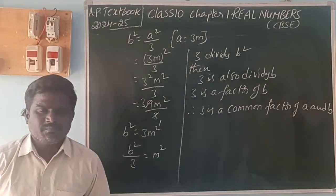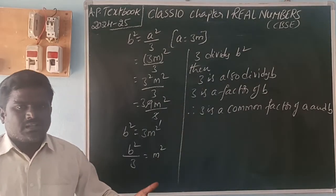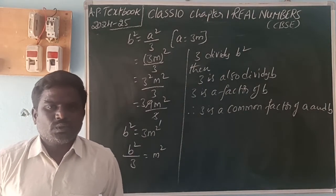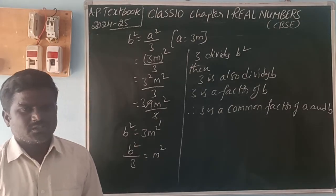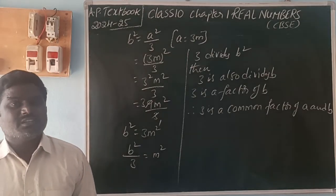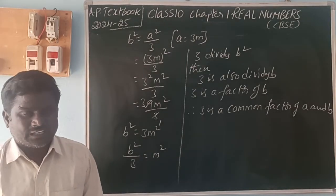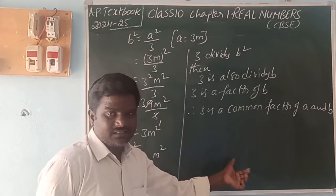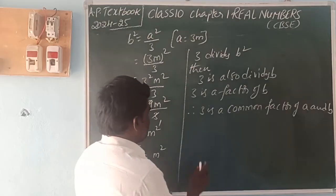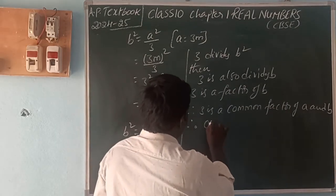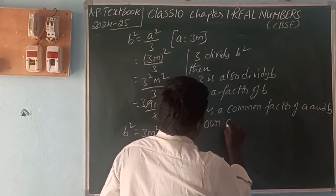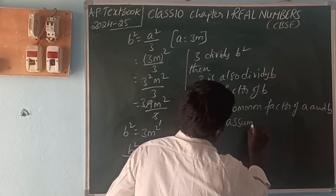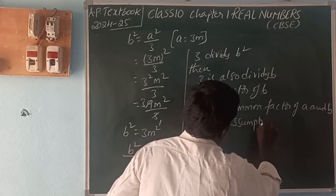Therefore 3 is a common factor of a and b. But our assumption was that a and b are co-primes — meaning there is no common factor between them. Since we found a common factor of 3, our assumption is wrong.